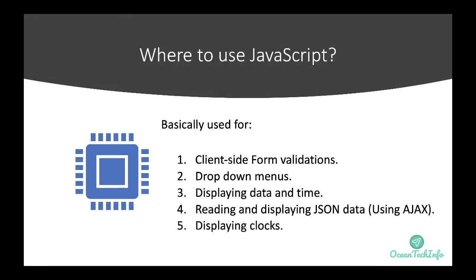JavaScript is also used to display the date and time. It is also used to read and display JSON data via Ajax calls. For example, when you want to get the information of a user after login, you make a network request, get the data in JSON format, and JavaScript can read that JSON format data and display it on the web browser or web page.